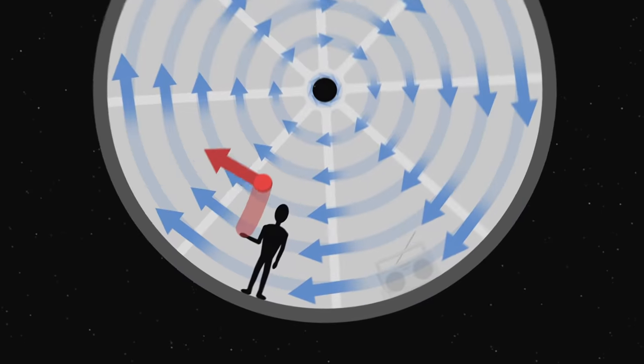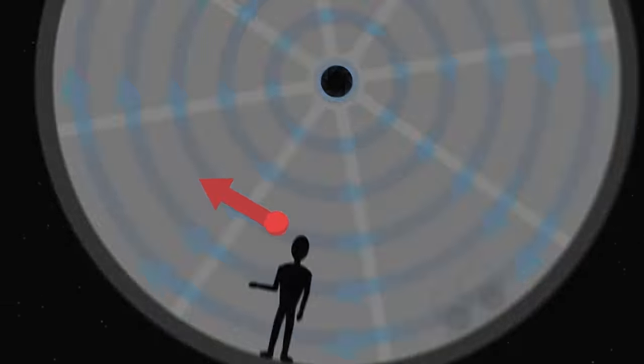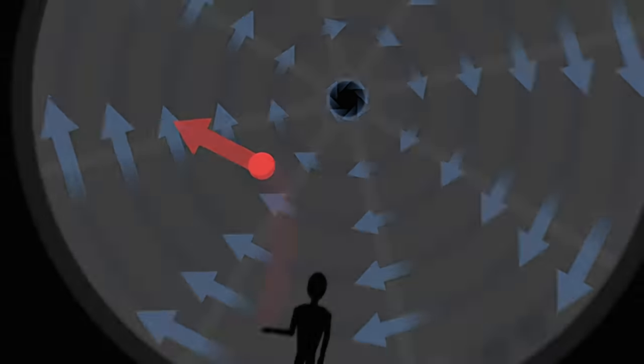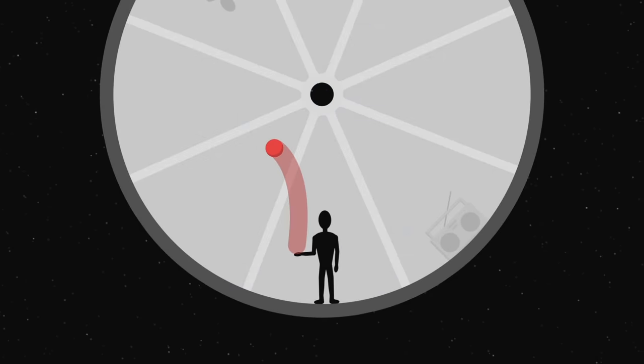By throwing the ball upwards, the astronaut brought it closer to the axis of rotation. Here, the ball moves faster than the wheel and will therefore edge ahead, which seems to deflect it from the astronaut's viewpoint.